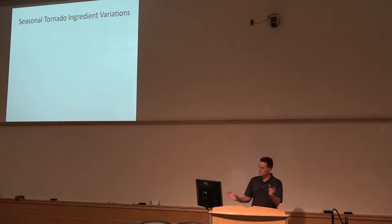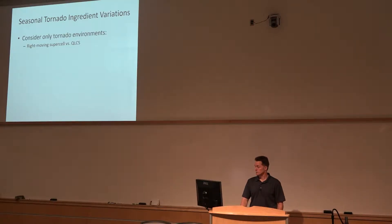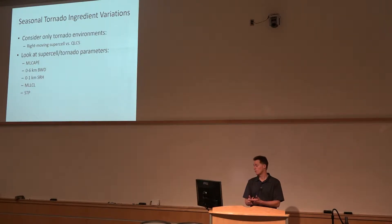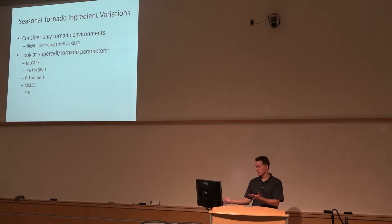Now let's look at what the spatial distribution of the ingredients related to supercell tornadoes looks like and how they vary — are the regional signals there? We're going to look only at tornado environments and compare QLCS events to right-moving supercells, not worrying about disorganized storms. We're going to use the significant tornado parameter ingredients: ML CAPE, the fixed-layer 0-to-6-kilometer bulk wind difference, 0-to-1 fixed-layer storm-relative helicity, LCL height for the 100-millibar mean parcel, and then the combined fixed-layer significant tornado parameter.